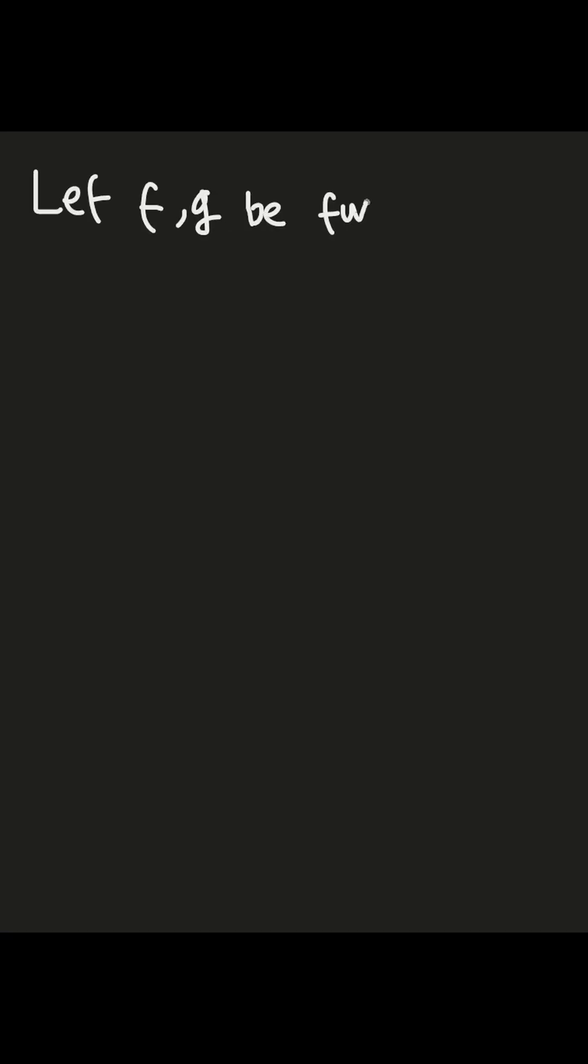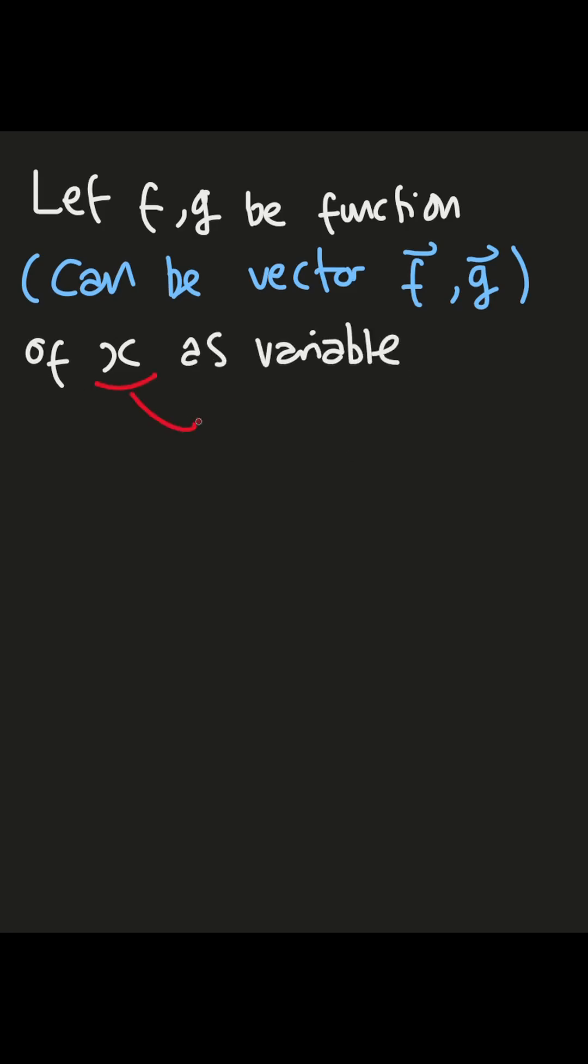Let f and g be a function—it can be a vector function, just f vector or g vector, or many algebraic objects which the function is dependent on x as a variable number as usual. By this statement, now limit and derivative can be defined.